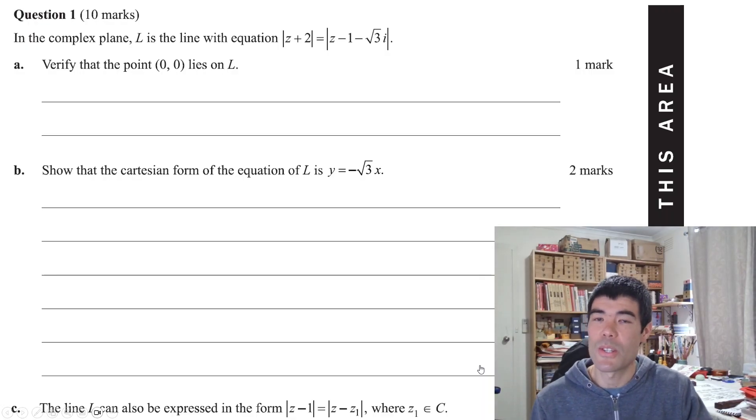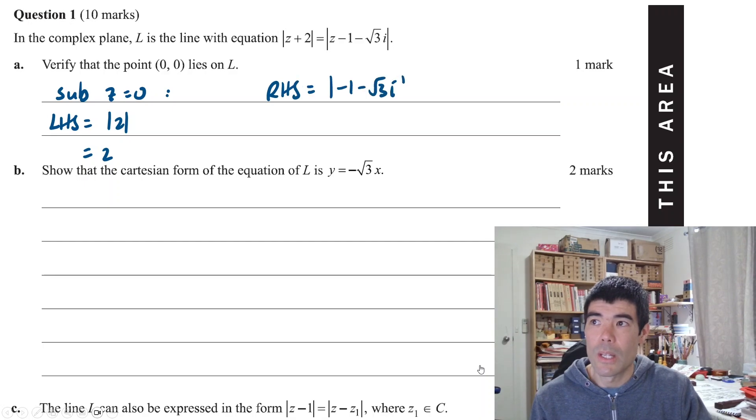So to verify that the point (0,0) lies on L, we can just sub it in to the left and right hand side probably separately. The left hand side just has a length of 2. The right hand side, we can use Pythagorean theorem. It also has a length of 2. So therefore, the point (0,0) is on the line.